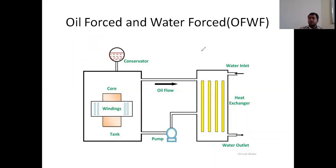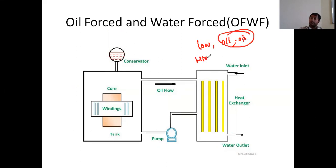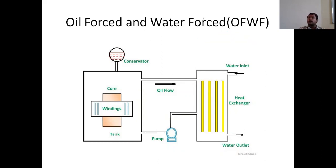These are the different types of cooling methods used in the transformer based on capacity. As capacity increases, we should use more sophisticated methods to reduce temperature. For low capacity, we use air natural and air forced. For higher capacity, we use oil natural and oil forced with air forced. For huge capacity, we use oil natural or oil forced with water forced — because water absorbs temperature much faster than air. This is all about the cooling techniques of the transformer.